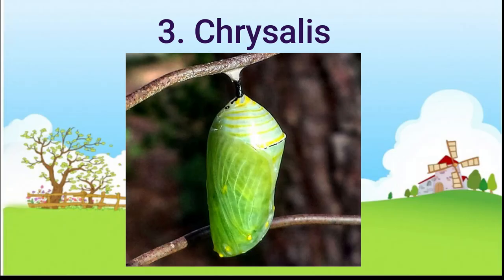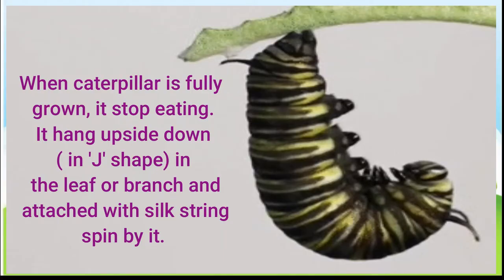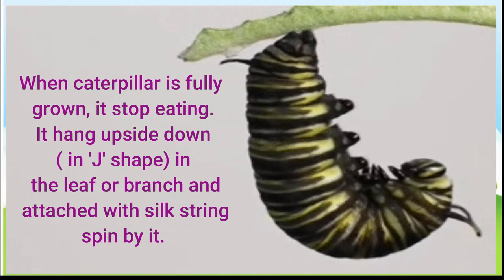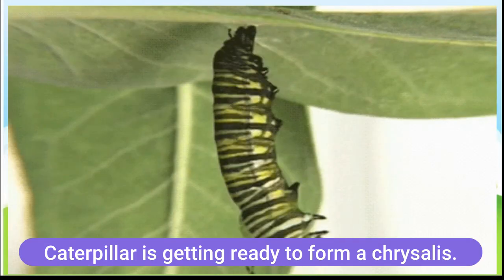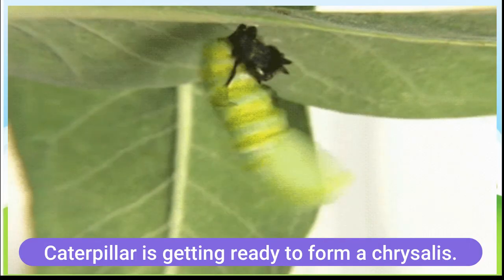The next stage is the chrysalis. When the caterpillar is fully grown, it stops eating. It hangs upside down from a leaf or branch, attached with a silk string it has spun. At this point it looks like a J-shape, and the caterpillar is getting ready to form a chrysalis.